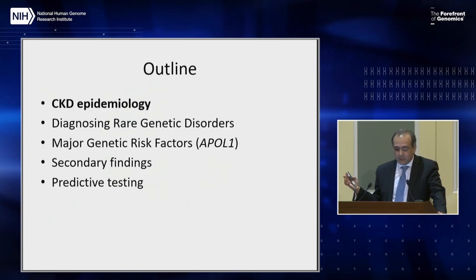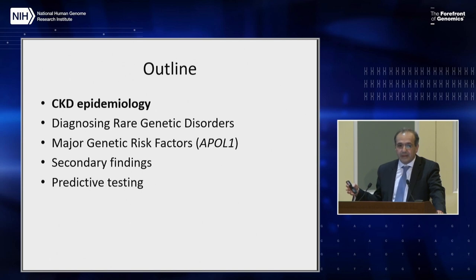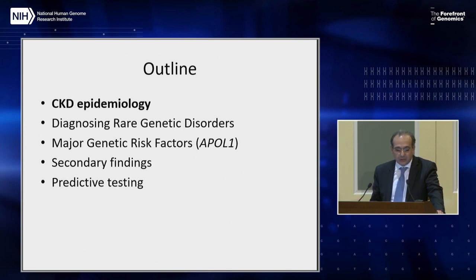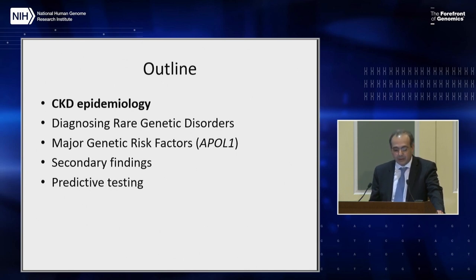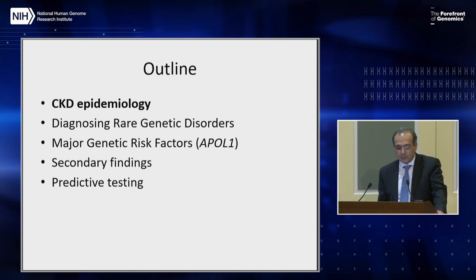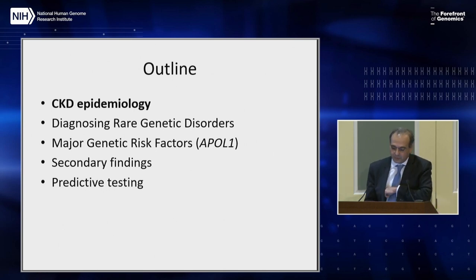My goal today is to talk about how we've approached the genetics of kidney disease as we've applied successive genomic technologies, going through CKD epidemiology, then talking about how we can diagnose rare genetic disorders through sequencing, discussing major genetic risk factors — mainly APOL1 — how secondary findings through sequencing can influence management of chronic kidney disease, and briefly discussing some issues around predictive testing.